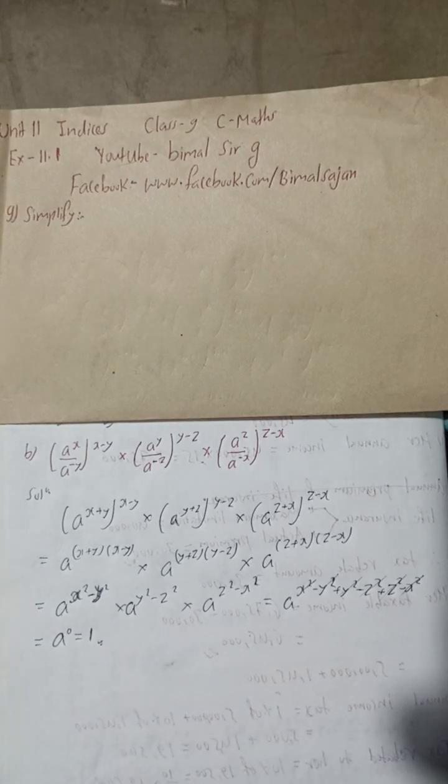So this is a and nothing is at the power, so this will be 0. So a to the power 0 is 1. So this is the required solution of this question.